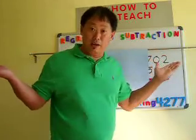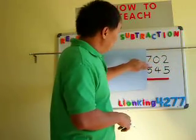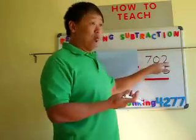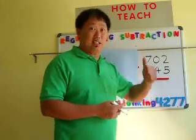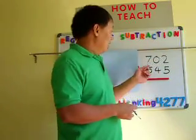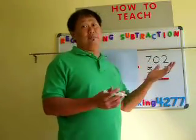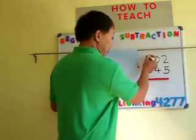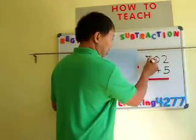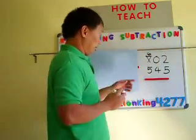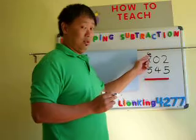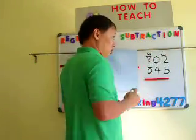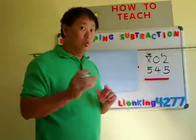So zero asks: 'Why don't you ask seven? Maybe he has some.' And seven says: 'Sure, I have money — I'll let you borrow.' So seven is crossed out and becomes a 6 now. But do we give the borrowed amount straight to 2? No, don't do that.